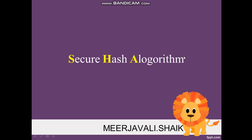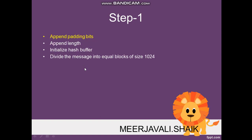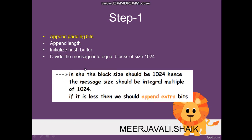SHA-512 comes under the SHA-2 version. Without further delay, I will explain the steps involved in processing SHA-512. The first step is appending padding bits. SHA-512 processes a block size of 1024 bits. If any block size is less than required, we add extra bits called padding bits to make it a 1024-bit block.